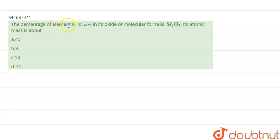The percentage of element M is 53 percent in its oxide of molecular formula M2O3. Its atomic mass is about?